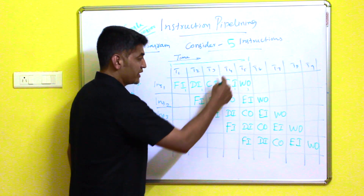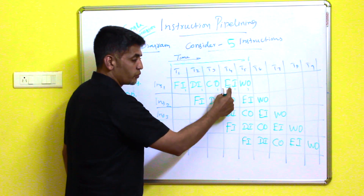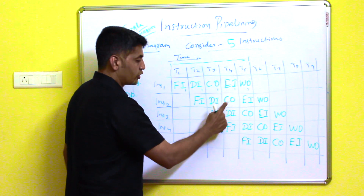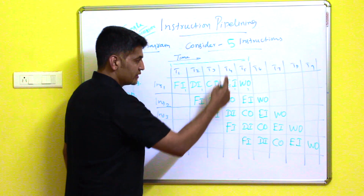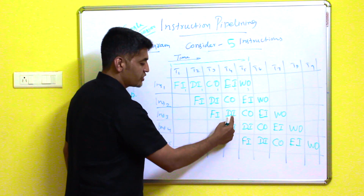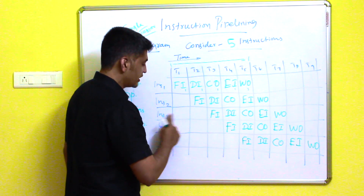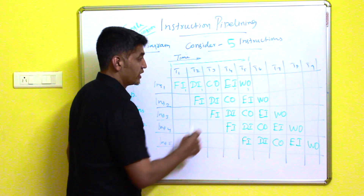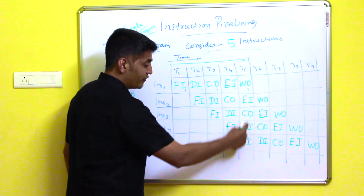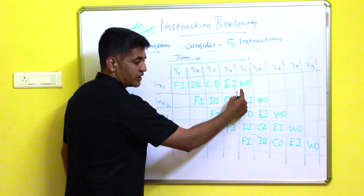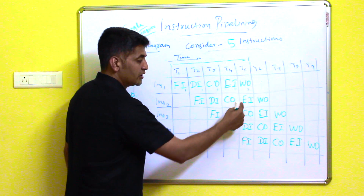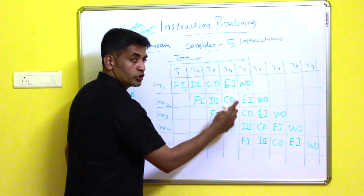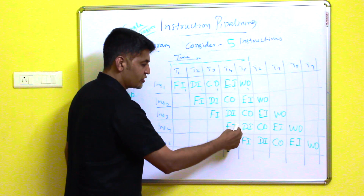At time t4, instruction one is executed, instruction two has its operand fetched, instruction three is decoded, and instruction four is fetched. At time t5, instruction one's operand is stored, instruction two is executed, and instruction three has its operand fetched.